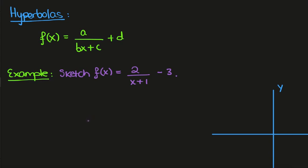In this video we want to look at sketching hyperbolas. Hyperbolas are functions of the form a over bx plus c plus d. If we look at the standard hyperbola, which is just 1 over x, it has a horizontal asymptote at y equals 0 and a vertical asymptote at x equals 0.